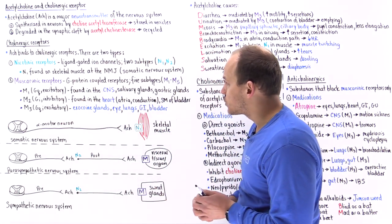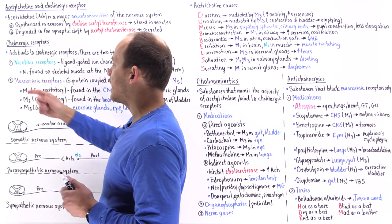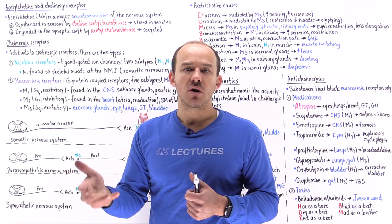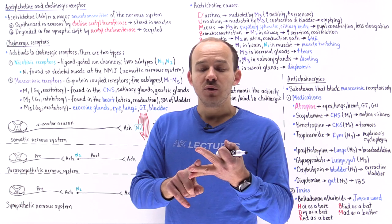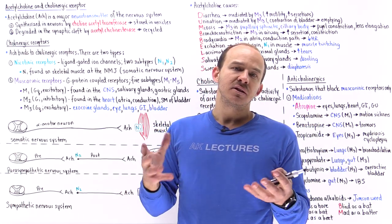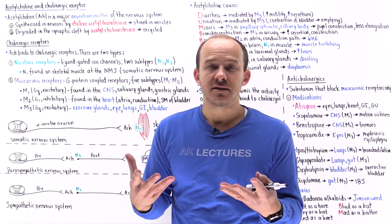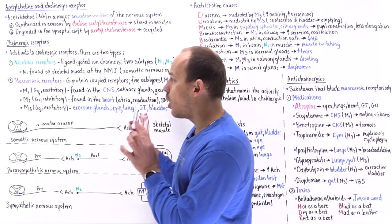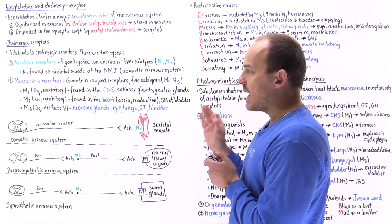There are five different subtypes of muscarinic receptors: M1, M2, M3, M4, and M5. We have two types of nicotinic and five types of muscarinic. M4 and M5 are located in the brain, but they're typically not tested. M1, M2, and M3 are important because these are tested.